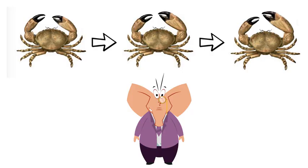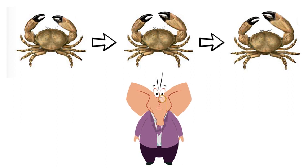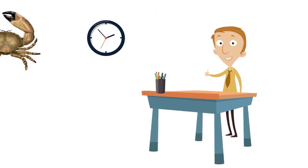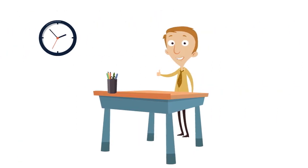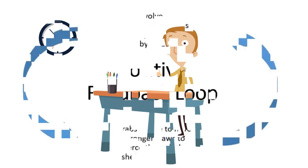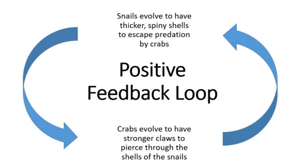This puts pressure on the crabs again, forcing them to evolve even stronger claws. Wow, that's so cool. It seems like it's a chain effect. Yes, it kind of is. To use a scientific term, it is a positive feedback loop.